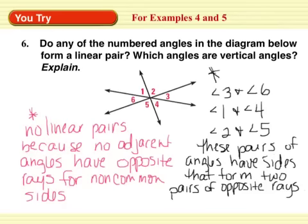The first question: do any of the numbered angles in the diagram below form a linear pair? There are no linear pairs because no adjacent angles have opposite rays for non-common sides. If you just look at 1 and 6, the non-common sides do not form opposite rays. Which angles are vertical angles? I have 3 pairs: 3 and 6, 1 and 4, and 2 and 5.